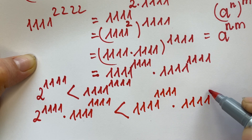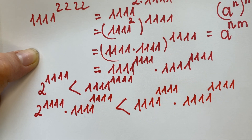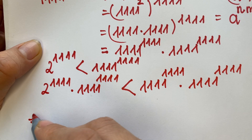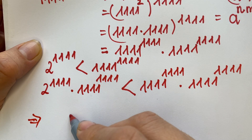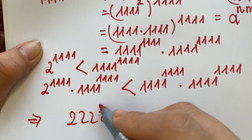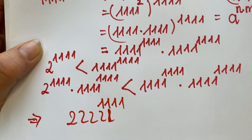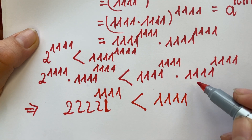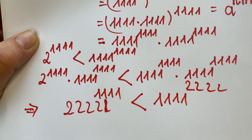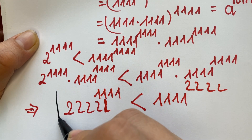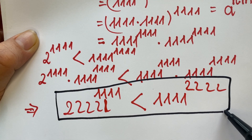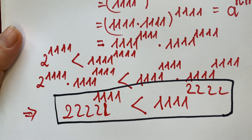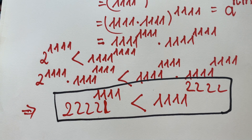So therefore 2222^1111 is smaller than 1111^2222. That is the key of the problem. I know it's quite simple for some people, but also some people may struggle with it. Thank you for listening, don't forget to subscribe to my channel. Love you all, bye!